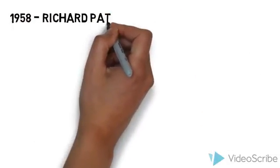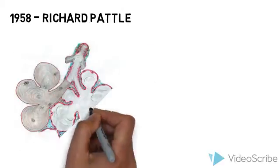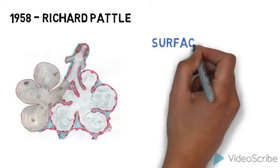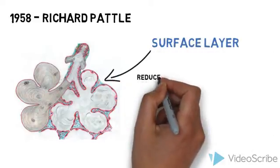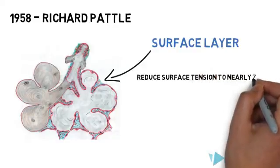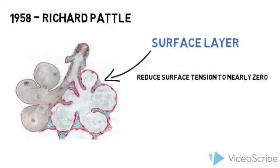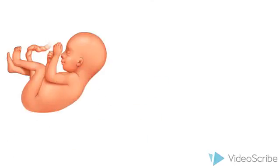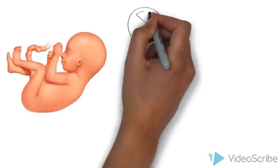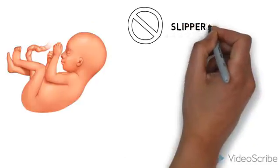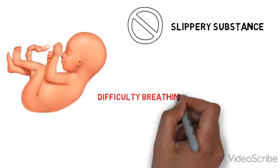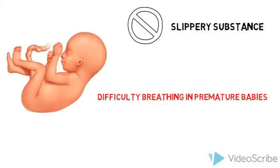In 1958, Paddle wrote a paper discussing the properties of his lungs and the surface layer. This surface layer acted by reducing surface tension to nearly zero. He observed that this lung lining substance actually appeared in fetal development, and it was also suggested that the absence of this lung lining substance may be the difficulty in premature babies due to premature baby lung development.